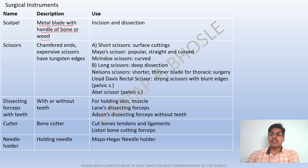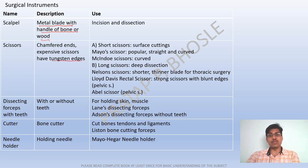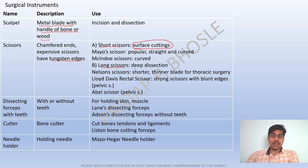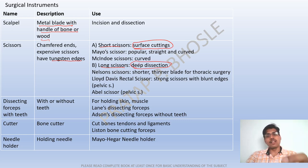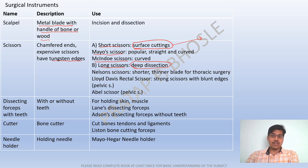Scissors have chamfered ends; expensive scissors have tungsten carbide edges. Short scissors are for surface cutting; long scissors are for deep cutting. Short scissors: Mayo's scissors and McIndoe's scissors. Long scissors: Nielsen scissors, Lloyd-Davis rectal scissors, and Abel scissors. Remember: M for short — Mayo and McIndoe; Nielsen, Lloyd, Abel are long scissors.